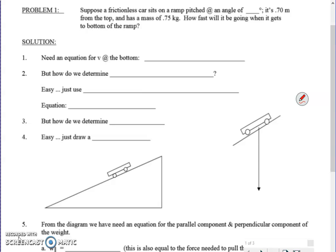Okay so let's look at our problem. We have a frictionless cart sitting on a ramp pitched at an angle of I believe it's set up for 10 degrees and we are going to release it 0.7 meters from the top and it has a mass of 0.75 kilograms. We want to know how fast it will be going when it gets to the bottom. So in other words we're looking for v, final velocity.